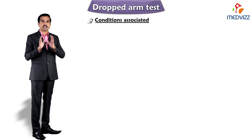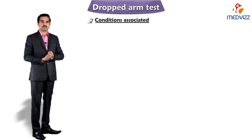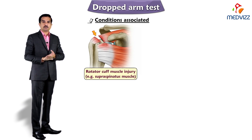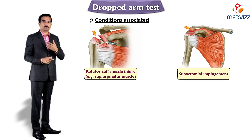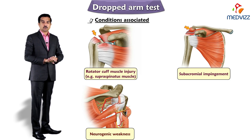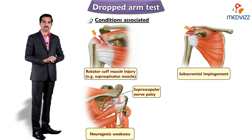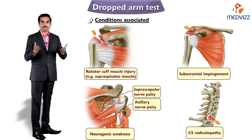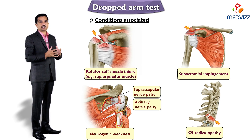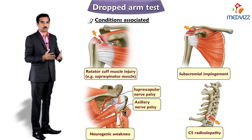The conditions associated with a positive result are mainly rotator cuff muscle injury, especially the supraspinatus muscle, or conditions such as acromial impingement, neurogenic weakness, suprascapular nerve palsy, injury to the axillary nerve, or C5 radiculopathy. All these conditions may be associated with a positive dropped arm test.